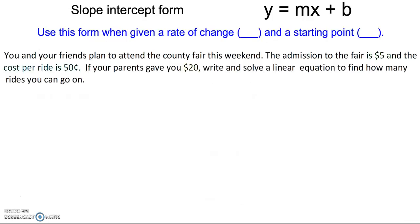So let's dive into the first type of problem, which is slope-intercept form. We know that the slope-intercept form of the equation is y equals mx plus b. So this type of verbal description is going to give us the information necessary to write the equation in that form.